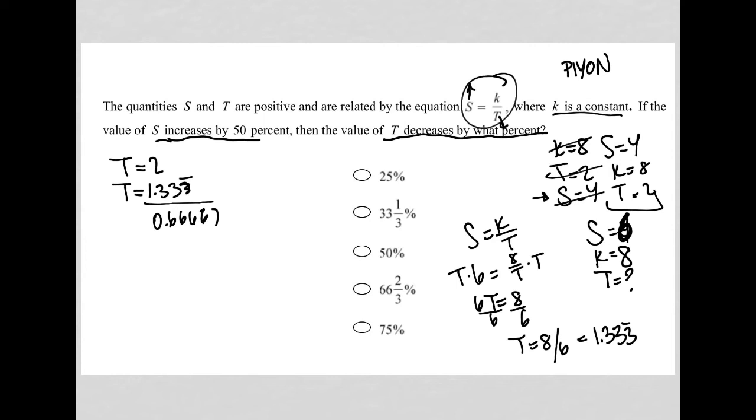So what percent decrease does this number here, right? What does this number represent on a percentage standpoint from the original value, right? From 2. So 0.6667 or 0.67, let's call it 0.67, is what percentage of 2? That's what we're trying to find.